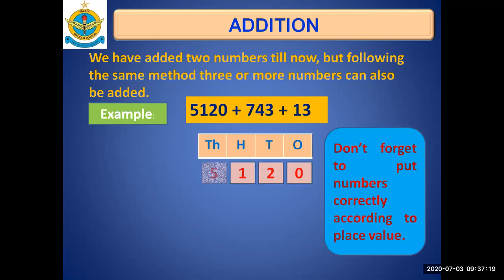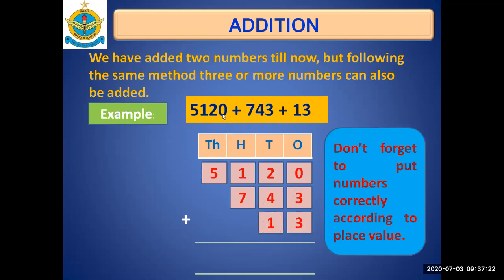Write the place values first. For 5120: zero goes to the ones place, two at tens, one at hundreds, five at thousands. Then for 743: three is written in the ones place, four at tens, seven in the hundreds column. If you write seven in the thousands column instead, your answer will come out wrong. Don't forget to place numbers correctly according to their place values.